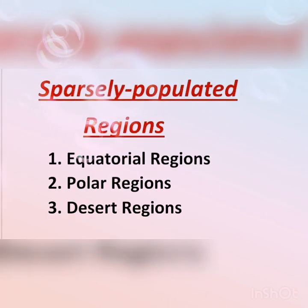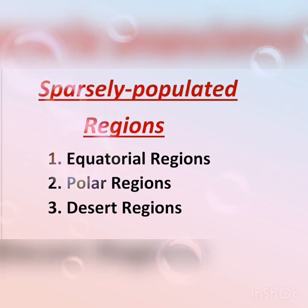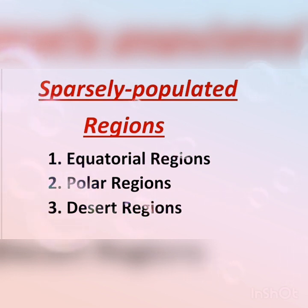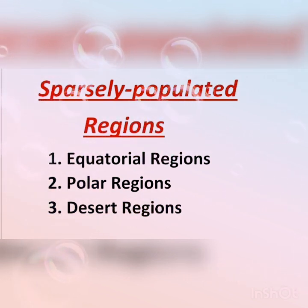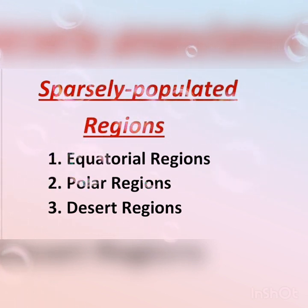Sparsely populated regions are the regions which have very little population. These regions do not support or provide humans with basic necessities. These types of regions include equatorial regions, polar regions, and desert regions.